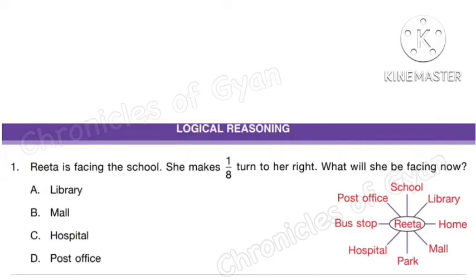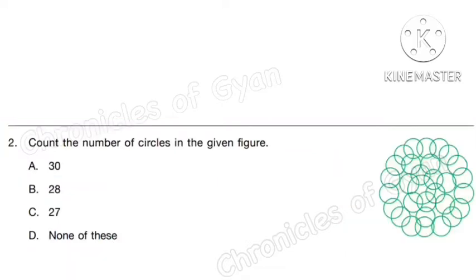Question 1. Rita is facing the school. She makes a 1/8th turn to her right. What will she be facing now? Among the 8 total places, she is moving just to the next place — that is 1/8th — which means she is moving to the library. So the correct answer is option A.